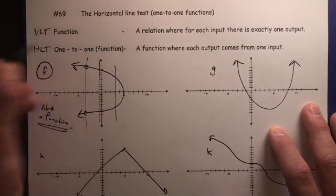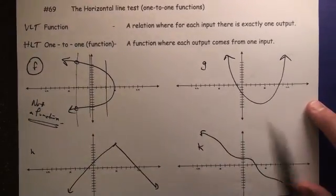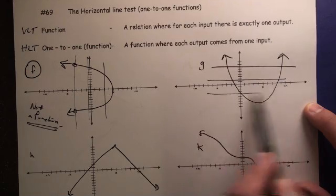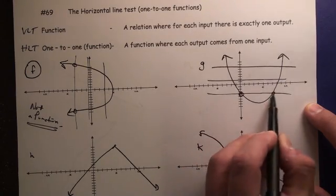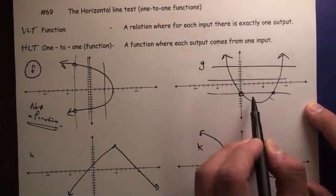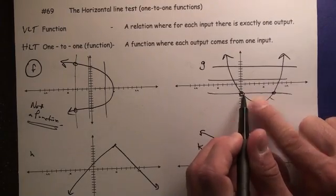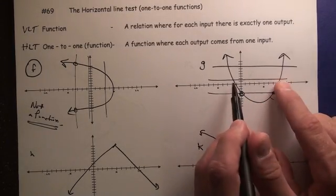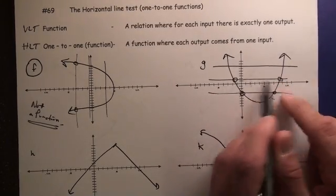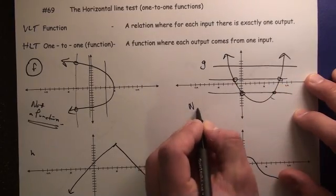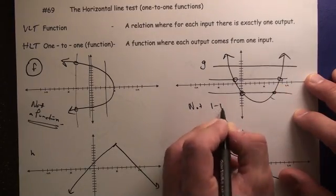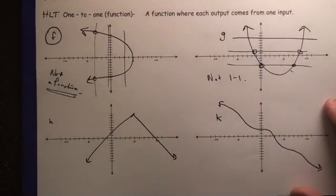For one-to-one, we use the horizontal line test, and function g, these horizontal lines are touching the graph at two spots, meaning this output comes from two different inputs. This output comes from two different inputs, so therefore not one-to-one because it fails the horizontal line test.